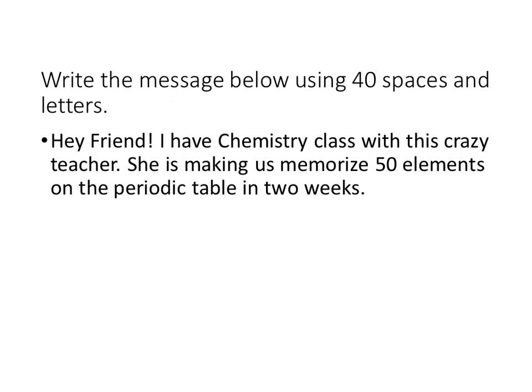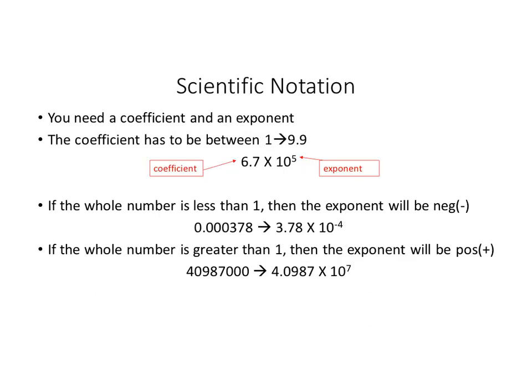Okay, so if you wanted to text that message to a friend, you would abbreviate a lot of things, right? Like maybe you wouldn't say chemistry, just say chem, or you know, you wouldn't necessarily use the word to, you'd put a 2 there. You probably would leave out this first little thing, hey friend. So you just make some modifications, some abbreviations to shorten it. So that's essentially what scientific notation does for us.